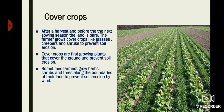Another process is growing cover crops. After a harvest and before the next sowing season, the land is bare. The farmer grows cover crops like grasses, creepers, and shrubs to prevent soil erosion. Cover crops are fast-growing plants that cover the ground and prevent soil erosion. Sometimes farmers also grow herbs and trees along the boundaries of their land to prevent soil erosion by wind.